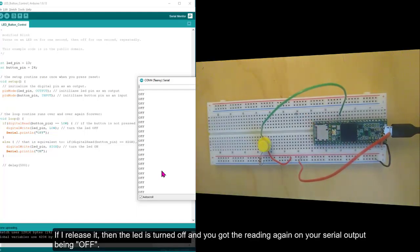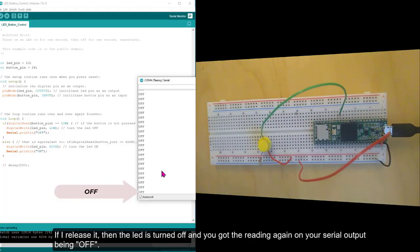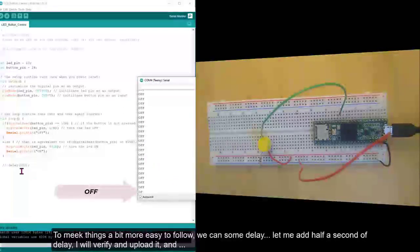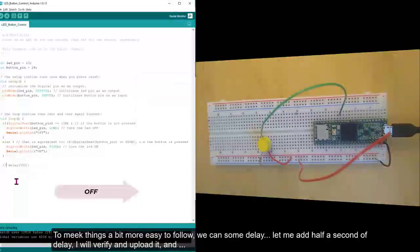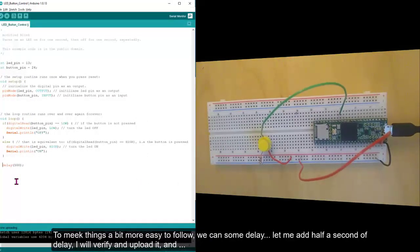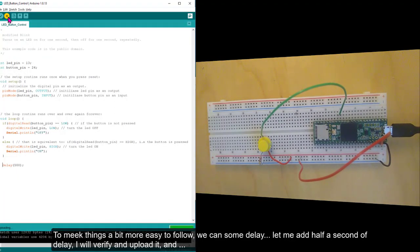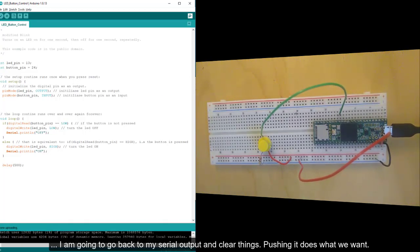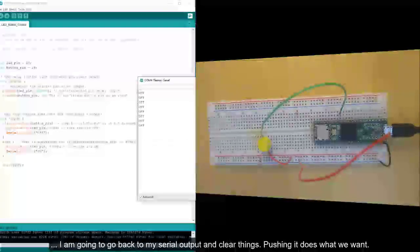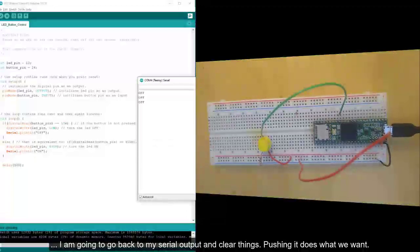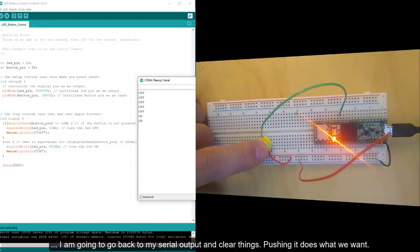If I release it, then the LED turns off. And then again, you've got the reading on your serial output being off. Now, to make things a little bit more easy to follow, you can add some delay. Let me add a half second of delay. I will verify it and upload it. And I'll go back here to my serial output where I'm going to clear things. Pushing it does what we want.